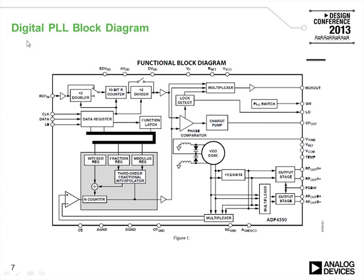A typical block diagram for a digital PLL is the ADF4350, which is very much an industry standard PLL. We have our reference input pin, a 10-bit reference counter, a doubler, and a divide-by-two counter — providing flexibility in terms of what input reference frequency you can use. Coming out of the reference divider, we go into our phase comparator which makes up our PFD.